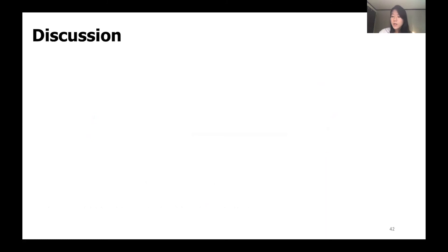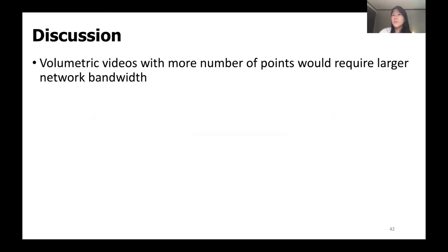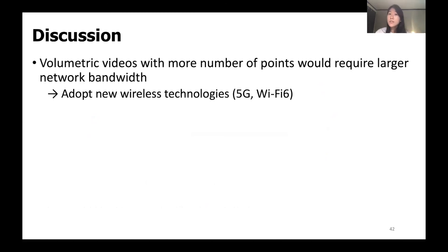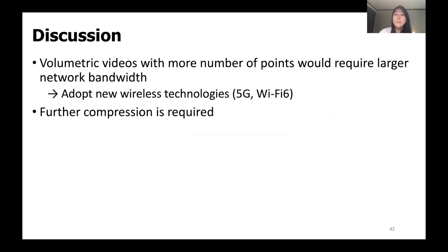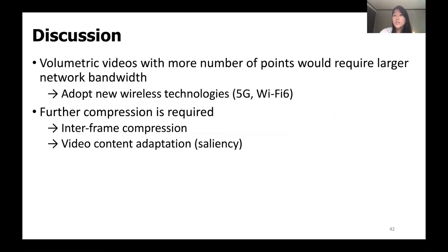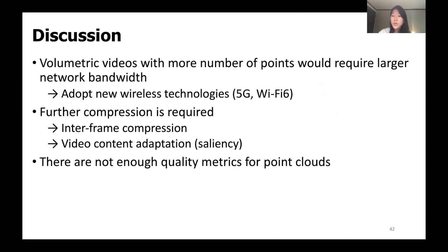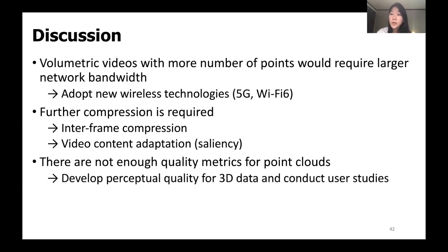Additionally, volumetric videos with more points will require larger network bandwidth, so adopting new wireless technologies like 5G and Wi-Fi 6 would be helpful. Compression rates should be further improved through inter-frame compression and video content adaptations such as using CLSC. Lastly, in this work we used conventional perceptual quality metrics for 2D videos, since studies on 3D data perceptual quality are limited. Developing adequate 3D metrics through real-world user studies will be very important future work.